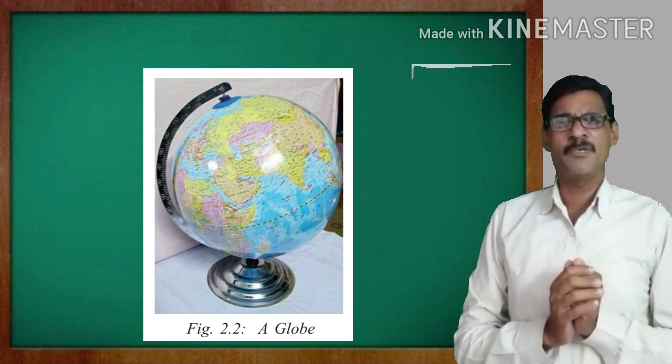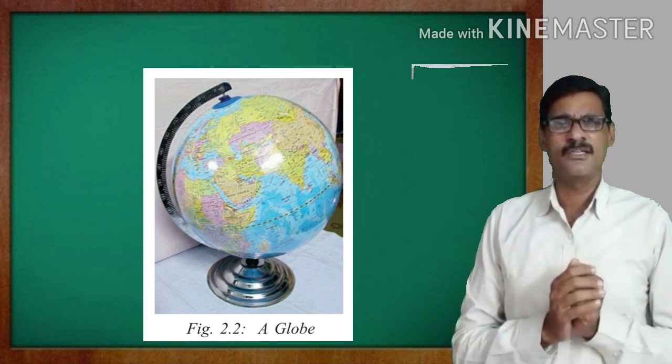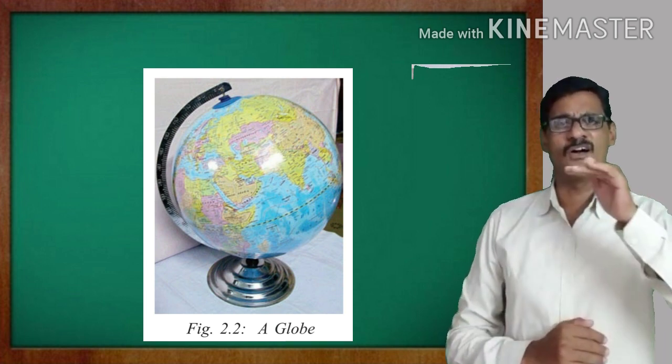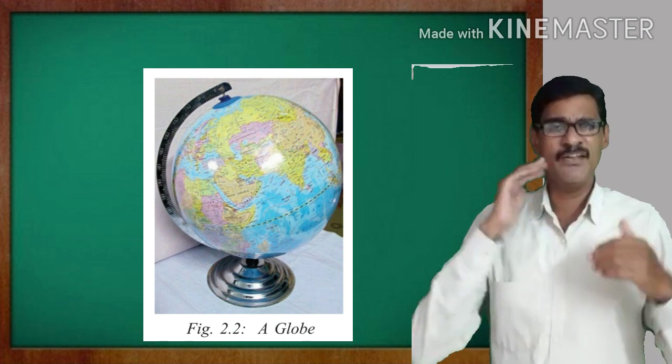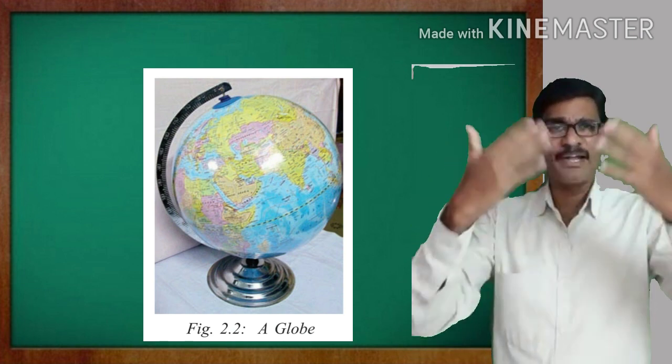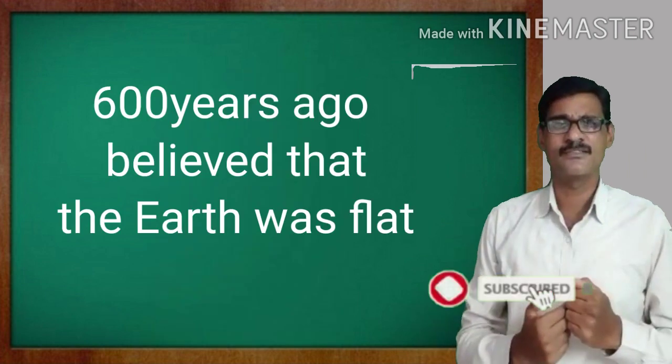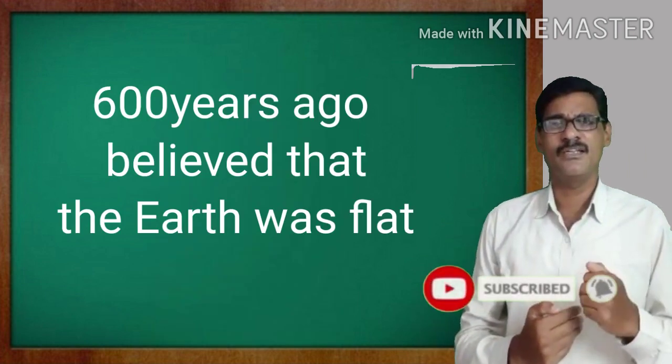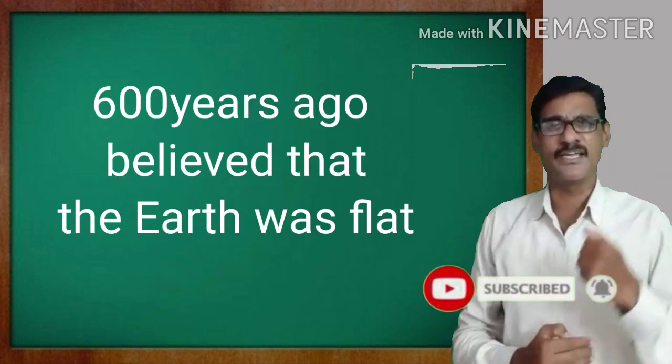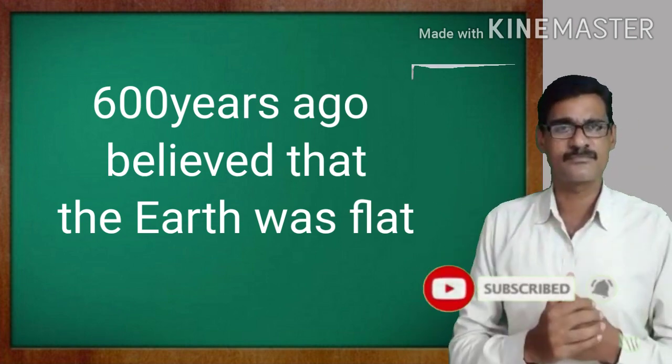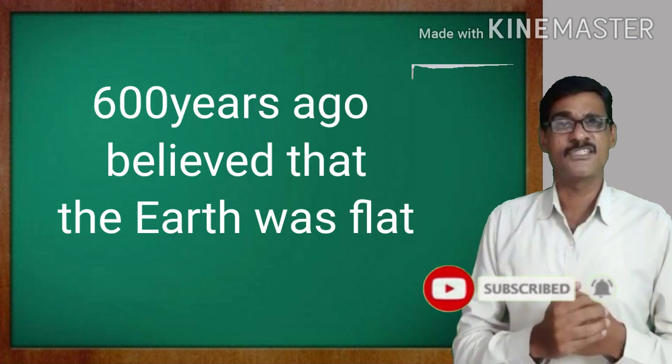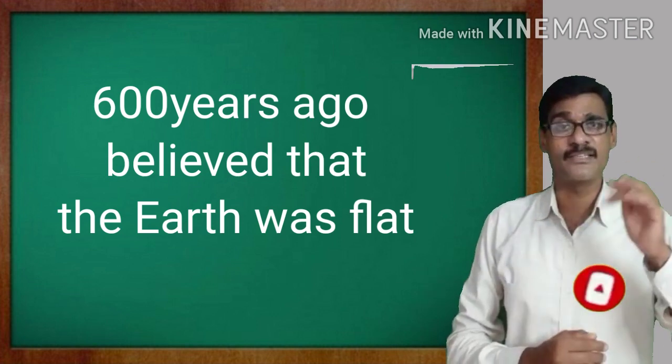In olden days the people believed that the earth is flat. And they believed that when we go to the end of this earth, we will fall off the earth into the sky. 600 years ago they believed like that.